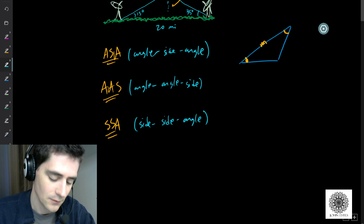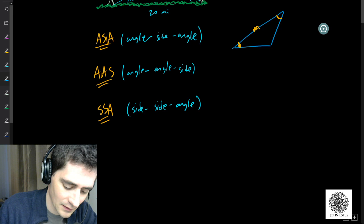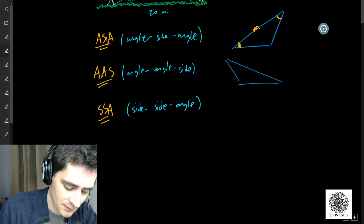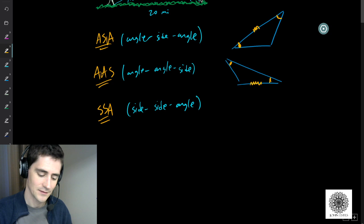In all these cases we can use the law of sines. Let me draw some pictures. For AAS — angle, angle, side — here I know an angle, an angle, and a side in that order.